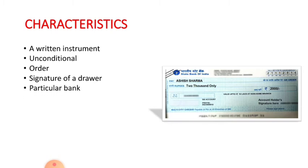Next is particular bank. The bank or banker on whom the check is drawn must be specified. It can only be drawn on the bank with which the drawer has his or her account. If it is drawn on a person who is not a banker then it cannot be called a check.